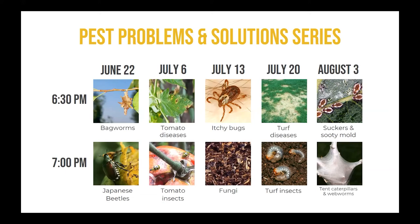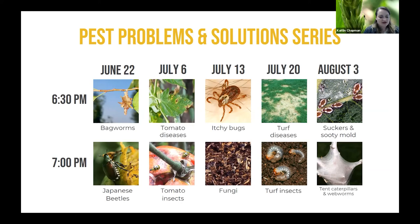A question came in: Can you tell the difference between a bagworm bag that is empty and one that is active with live caterpillars? Bags with live caterpillars won't be tied off on the tree yet — they'll be mobile and moving. Bags that have already pupated or are empty will be tied to the tree, and sometimes they just feel empty if you handle them. Generally, if you see any bags in the tree, just go ahead and remove them.